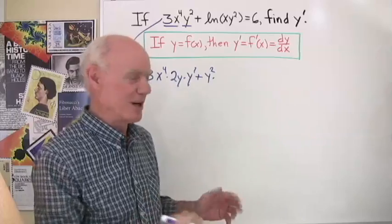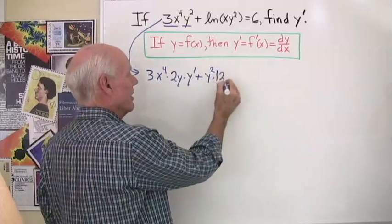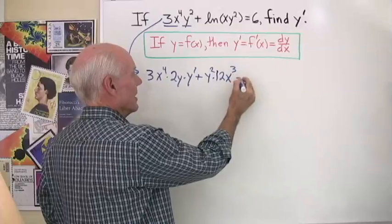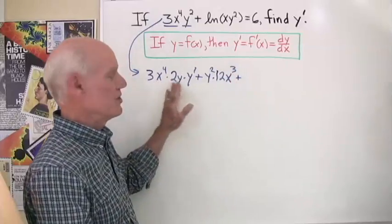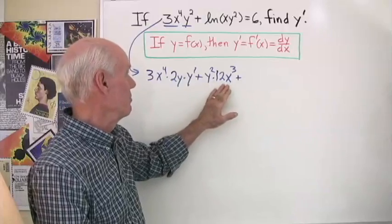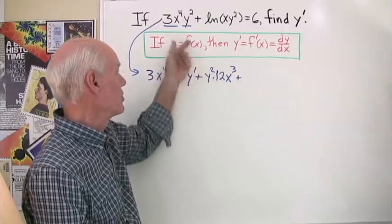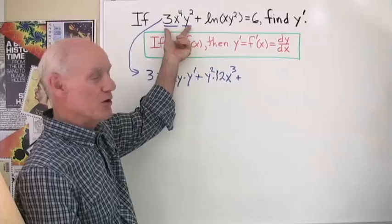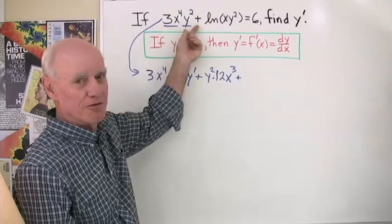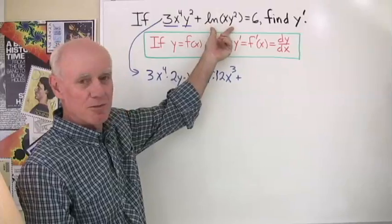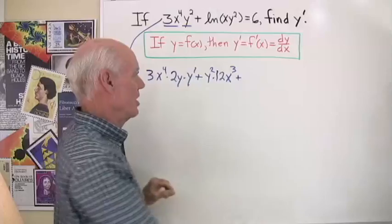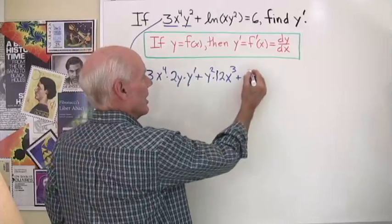When I differentiate 3x to the fourth with respect to x I get 12x to the third. So I have the first times the derivative of the second, plus the second times the derivative of the first — that handles the first expression as the product of two functions. Now I have a logarithm to differentiate using the chain rule.